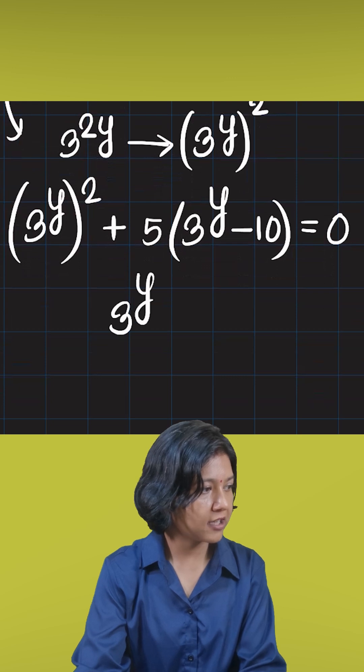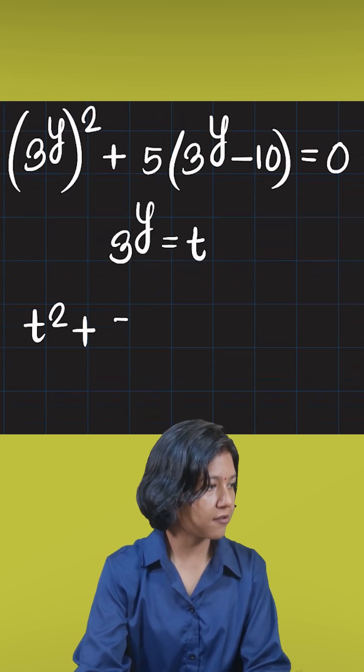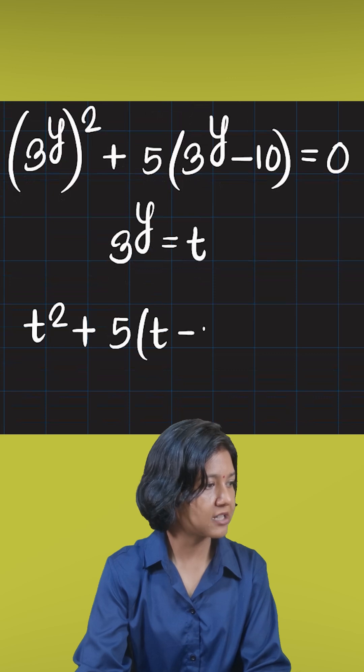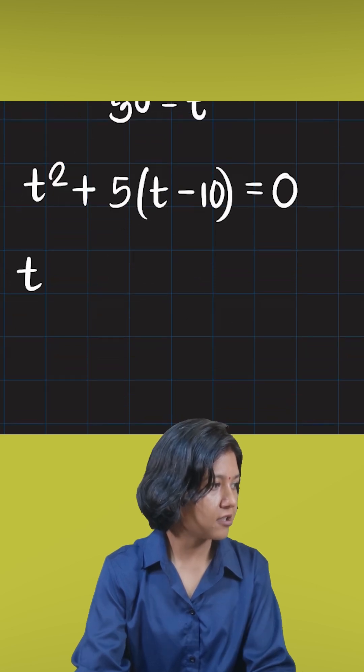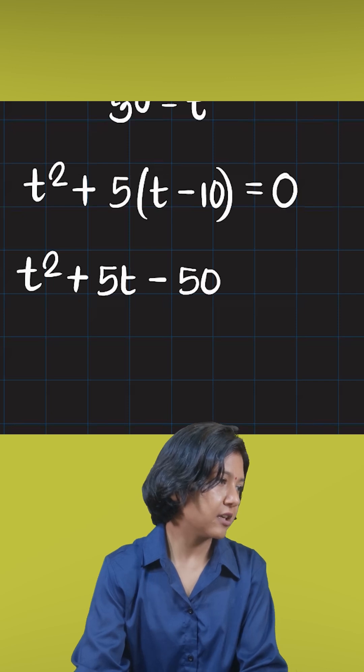So I'm saying 3 to the power of y, let me call this as t. If I do so, I have t squared plus 5 times t minus 10 equals 0. So t squared plus 5t minus 50 has to be equal to 0.